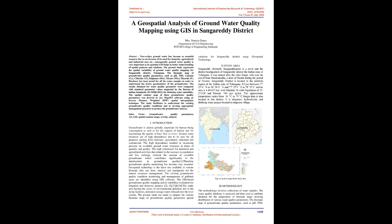The present study represents the spatial variability of groundwater quality mapping for Sangareddy District, Telangana. Thematic maps of groundwater quality parameters such as pH, TDS, calcium (Ca), chloride (Cl), sulfates (SO4), nitrate (NO3), fluoride (F), and hardness were tested for all water samples to understand the hydrogeochemistry of the groundwater. Results were compared with Bureau of Indian Standards IS-10500:2012 for drinking water suitability. The spatial contour maps were derived in ArcMap 10.5 using an inverse distance weighted spatial interpolation technique. The study facilitates understanding of existing groundwater quality conditions and developing appropriate management practices to protect groundwater sources.